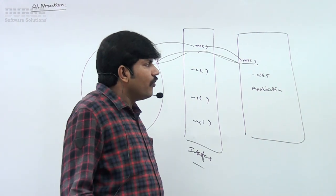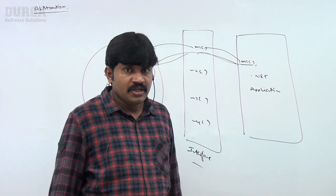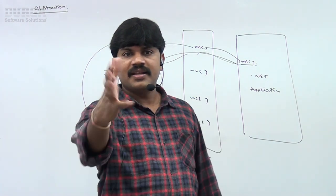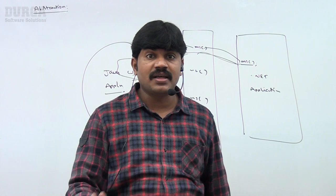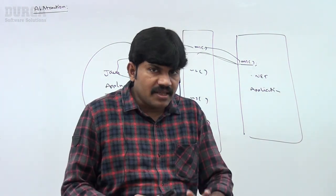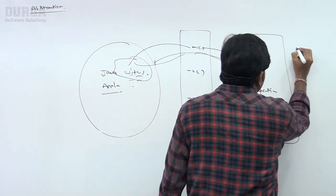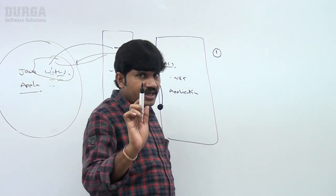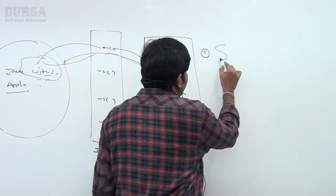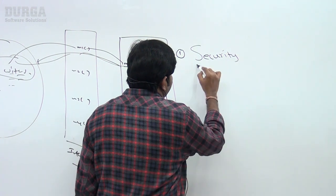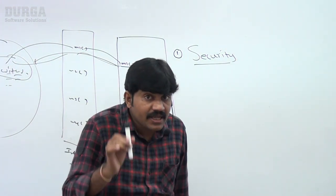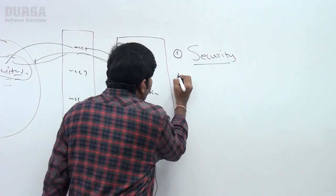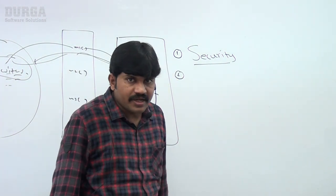What are the advantages of abstraction? Best example: ATM GUI screen — bank people highlight several services but never highlight internally how services are implemented. The first advantage: wherever hiding is there, the biggest advantage is security.